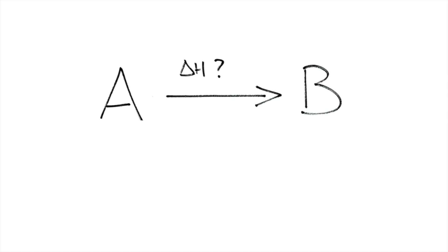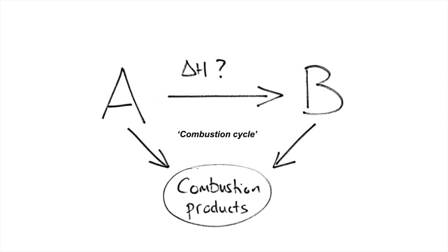The first thing I would do is create what I call a combustion cycle. In other words, we combust everything in the equation that we want to find the enthalpy change for into their combustion products.